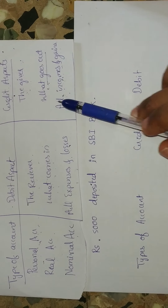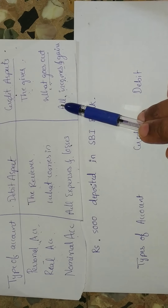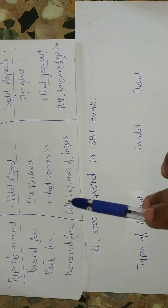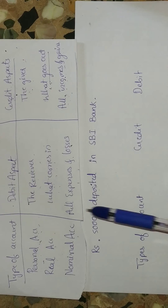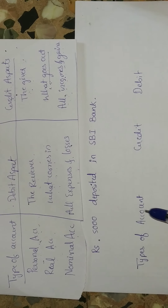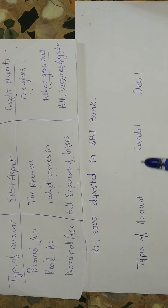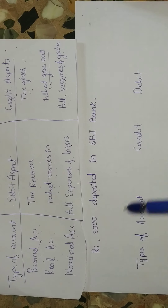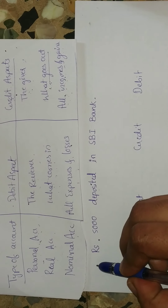You can see this table — this is a golden rule table. By following this table we are going to enter the accounts in credit and debit. In every transaction there will be two accounts because we are following the double entry system of accounting, so in every transaction we try to find out which two accounts this transaction is going to affect.